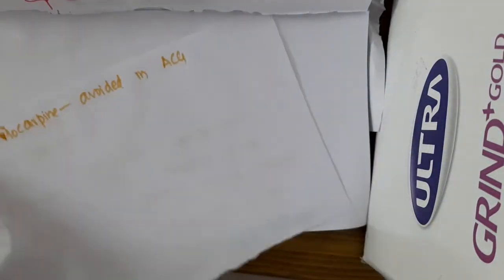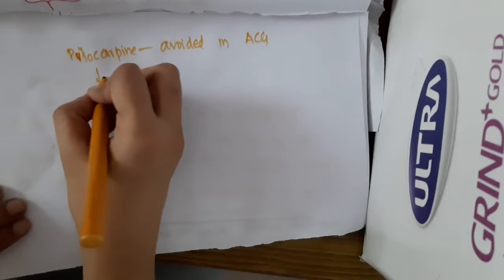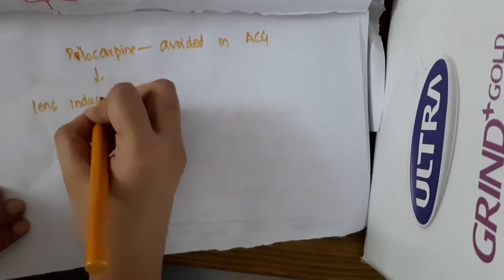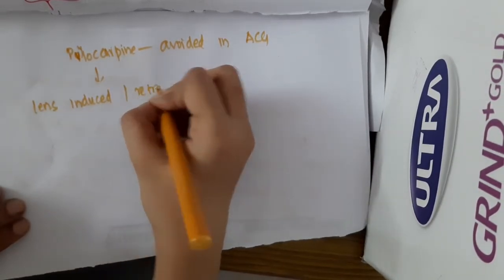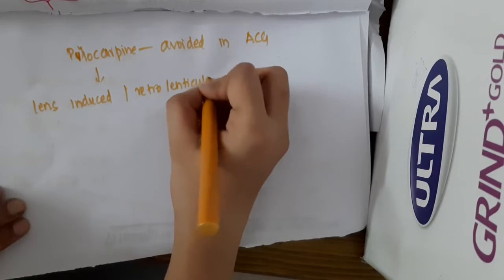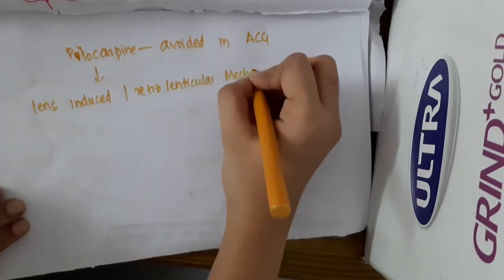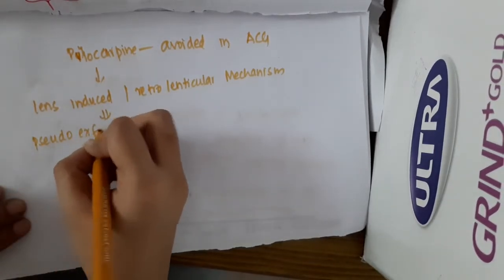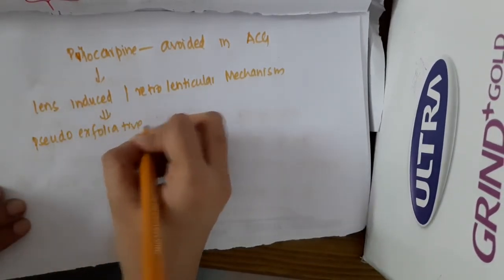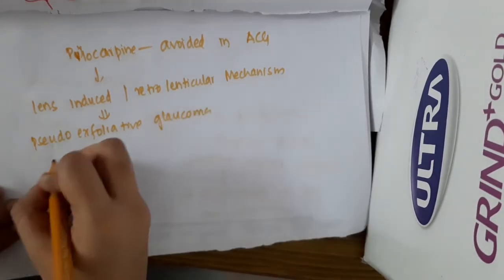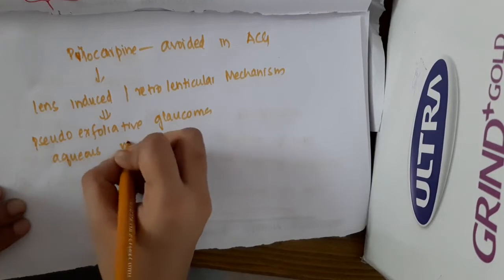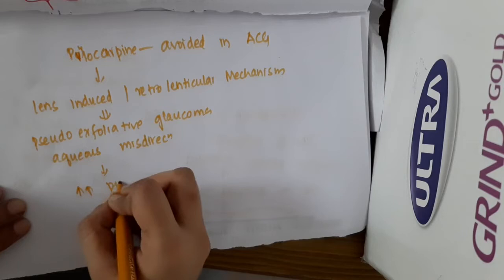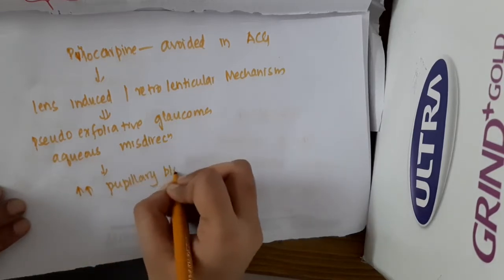It is avoided in angle closure glaucoma because this pilocarpine, with the help of lens-induced or retrolenticular mechanisms, will result in formation of pseudo-exfoliative glaucoma and it will also result in aqueous misdirection and finally it will increase the pupillary block.